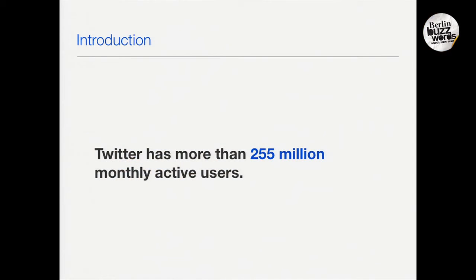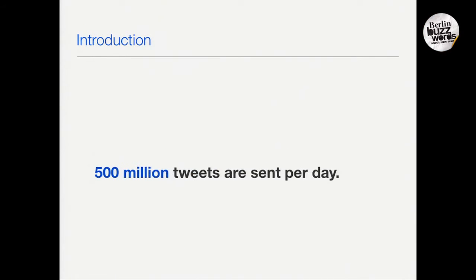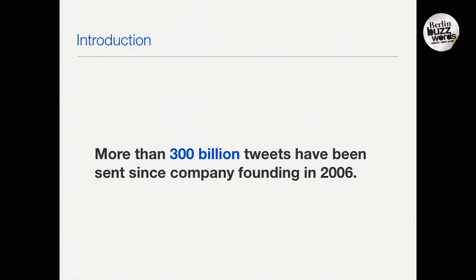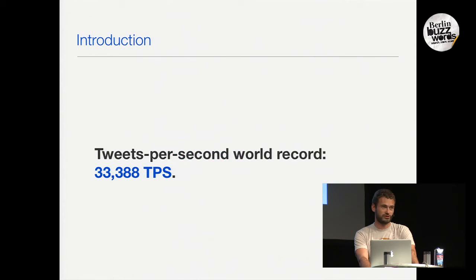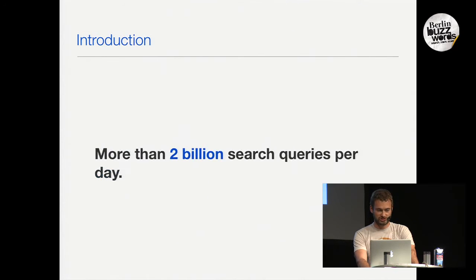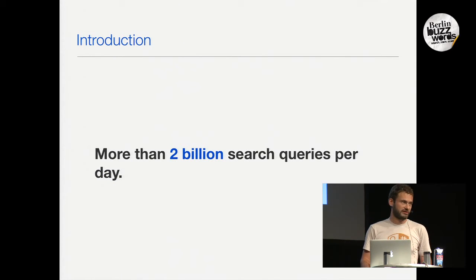Twitter has now more than 255 million monthly active users. We have about 500 million tweets every day and more than 300 billion tweets since Twitter was founded in 2006. Sometimes, probably soon when the World Cup is starting, we see new tweets-per-second records — the current one is 33,000 tweets per second. On the search side, we have more than 2 billion search queries per day, which has increased significantly in the last three or four years.